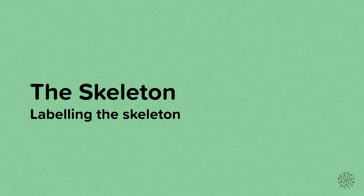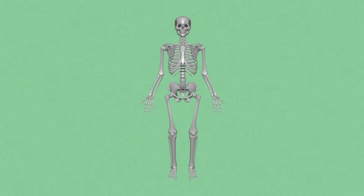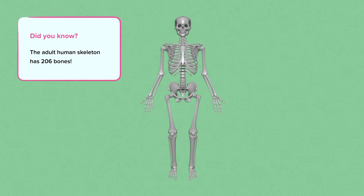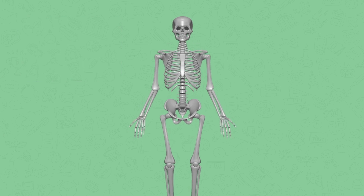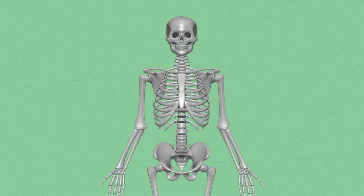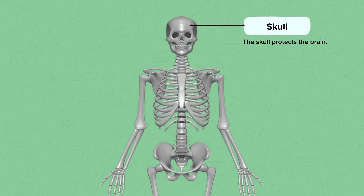Labelling the skeleton. Here we have a human skeleton. Did you know that the adult human skeleton has 206 bones? We're just going to go through a few. At the top of our skeleton we have the skull. The skull protects the brain, a bit like a helmet does when you put it on top of your head.